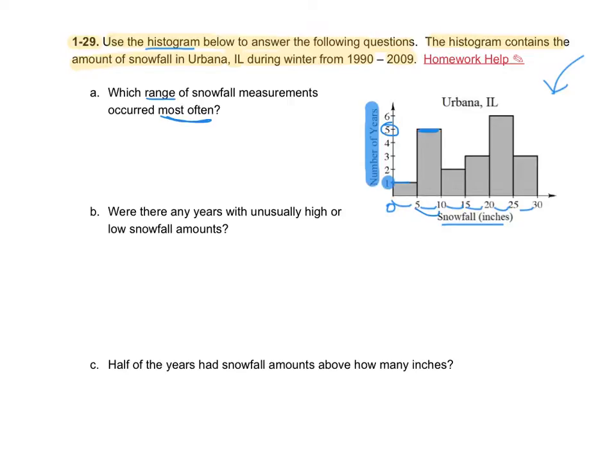Which range, though? Remember, the ranges are at the bottom. The tallest bar will give us the most often. For 6 years, we had a snowfall between 20 and 25 inches.